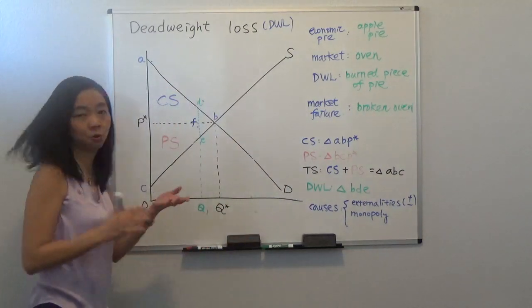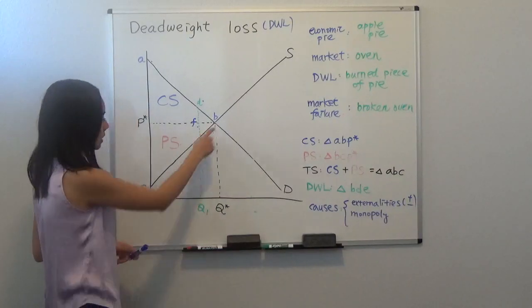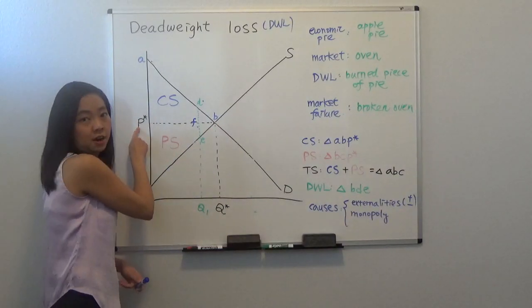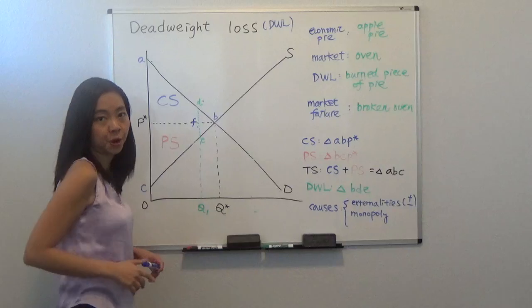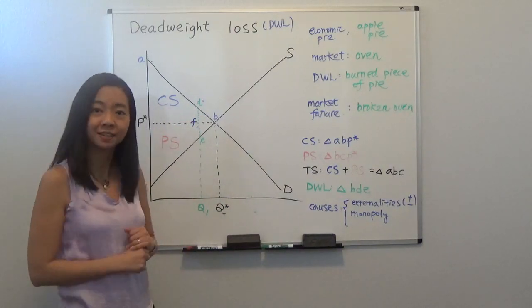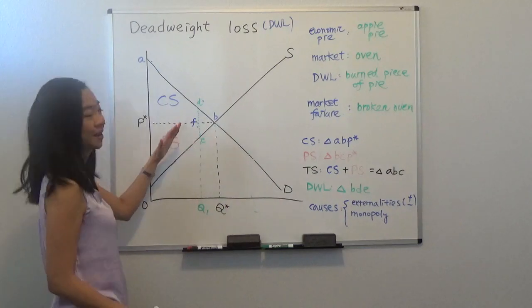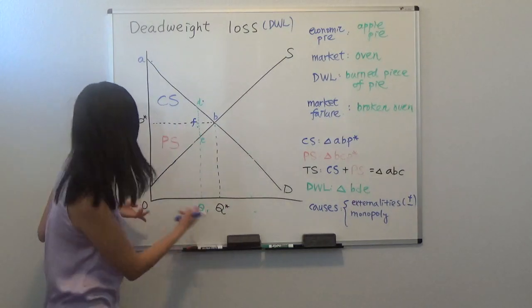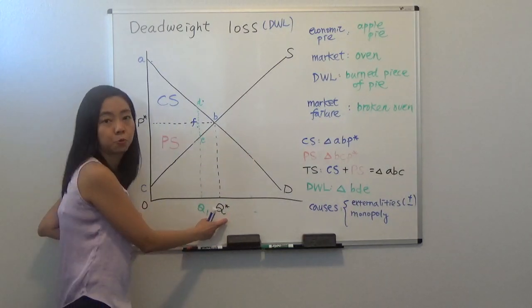And your producer surplus is also nice size, is area B, C, P star. And if you remember, producer surplus is the area below the price received by the seller above the supply curve. And the base of the triangle is from zero to the equilibrium quantity Q star.